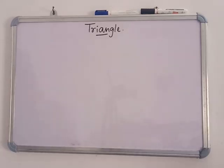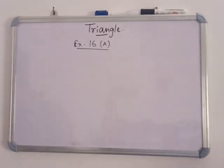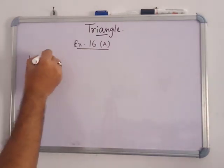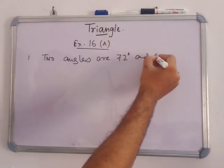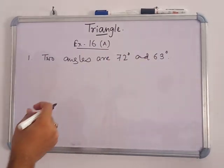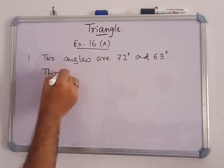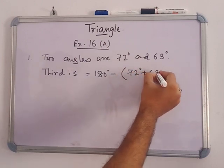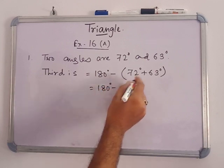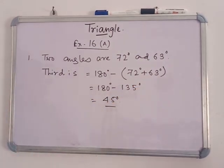Now we are going to discuss the exercise of 16A. Two angles of a triangle are given as 72 degrees and 63 degrees. We have to find the third one. We know that the sum of three angles is 180 degrees. So the third angle is 180 minus 72 plus 63, that is 180 minus 135, which equals 45 degrees.